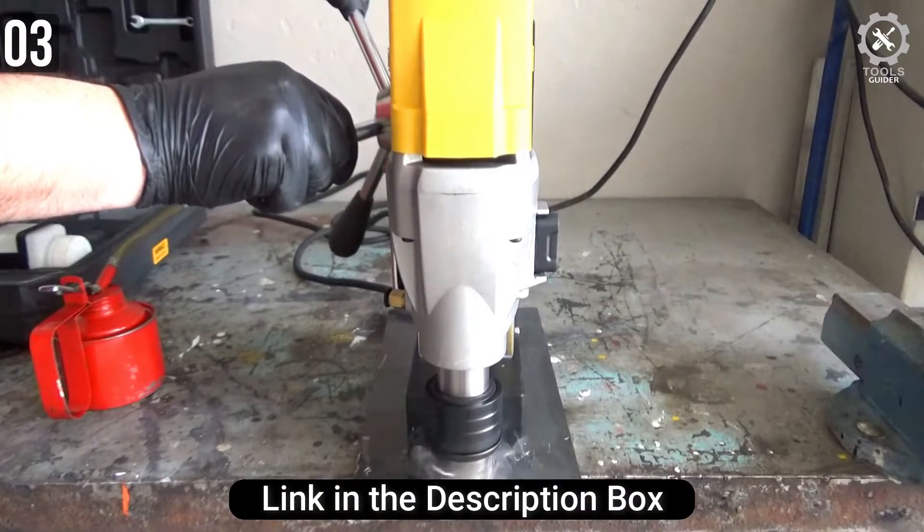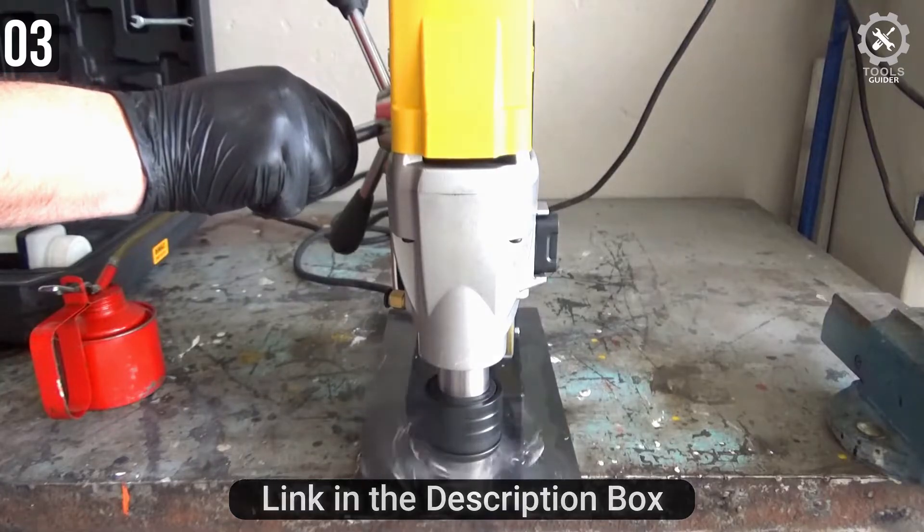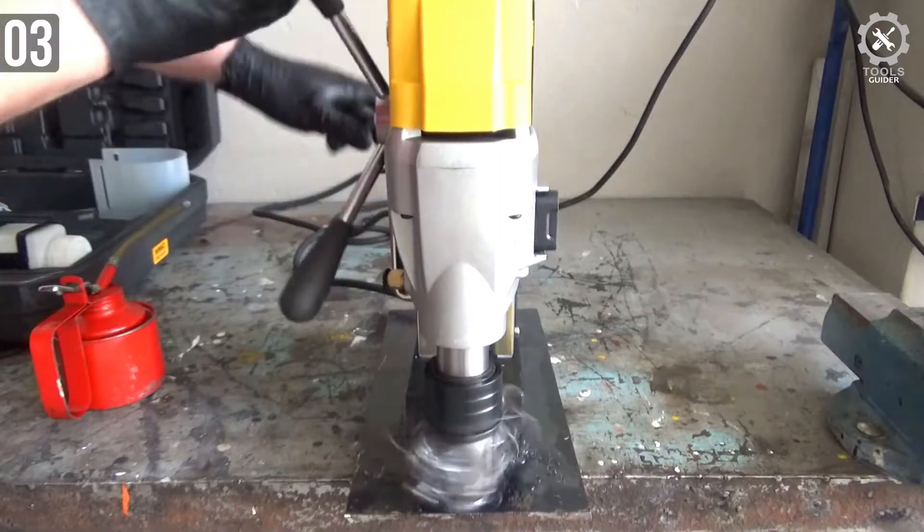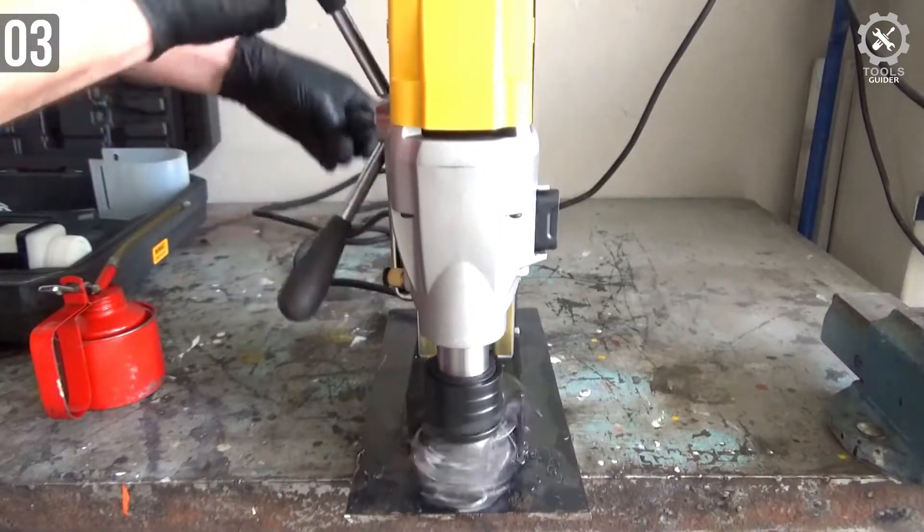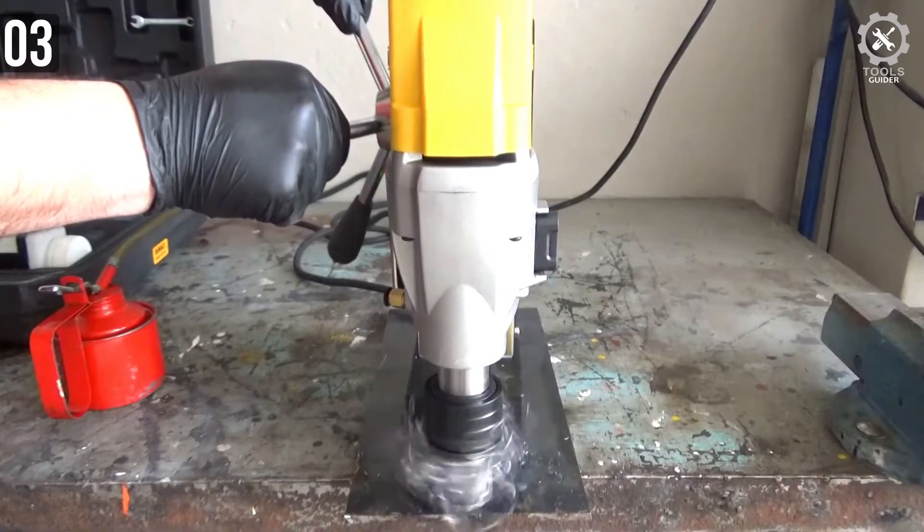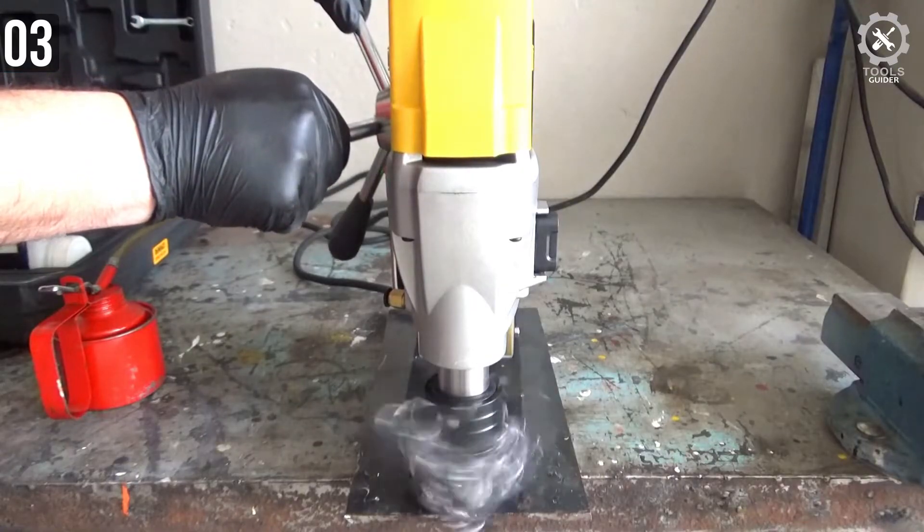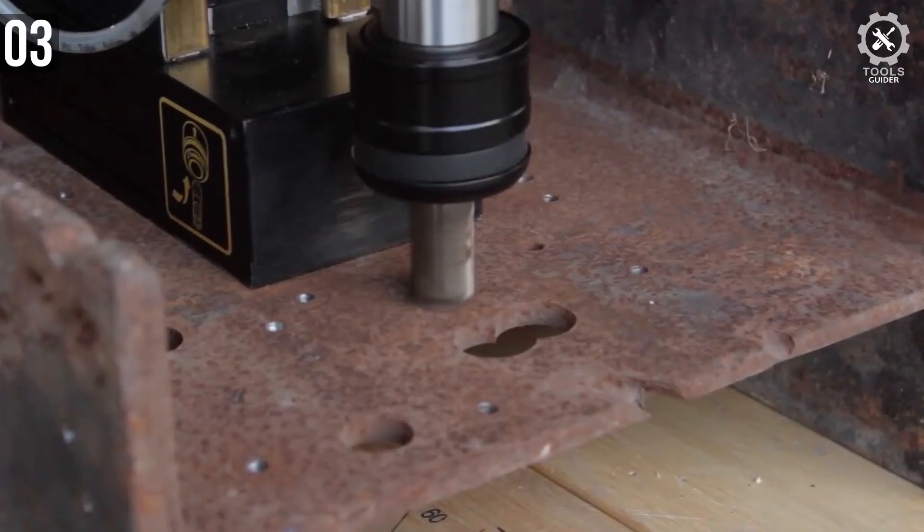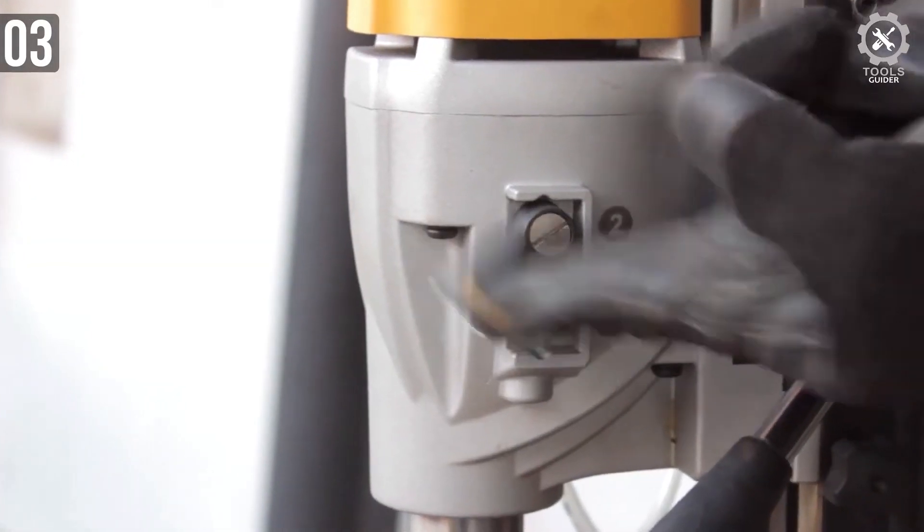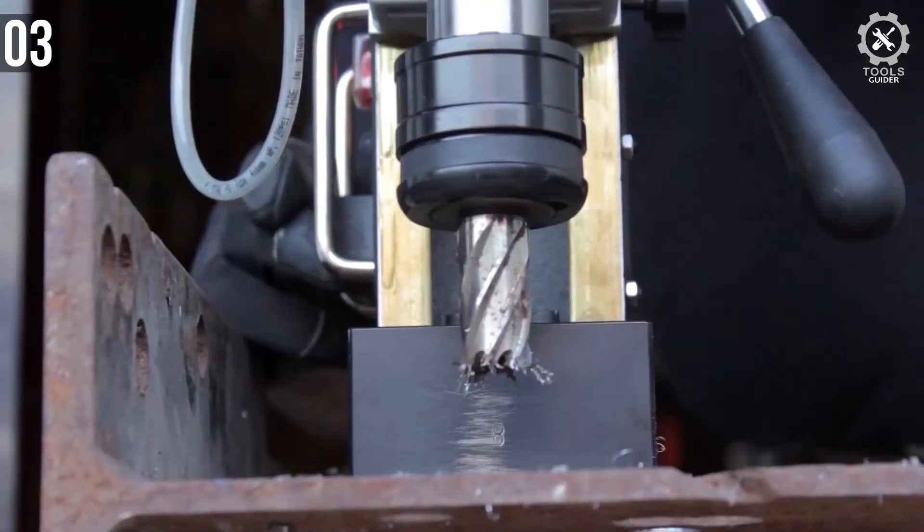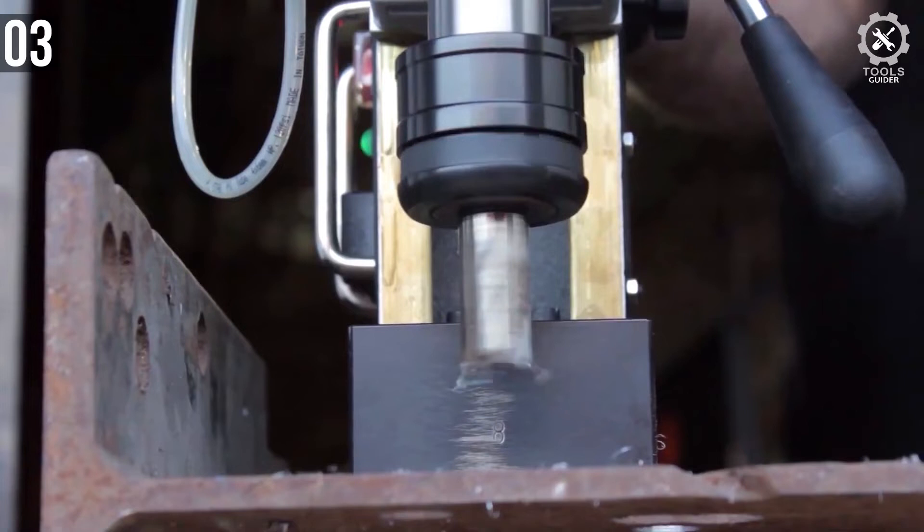The unit comes with a quick change chuck system, an overload protection with LED indicator, as well as with quick release feed handles. The thing that makes DWE1622K suitable for a variety of applications is its powerful engine. The 10.0 amp engine of this drill press provides excellent performance and can be used at two different speeds, 300/450 RPM, while the 4 inch drill travel offers maximum capacity for even the toughest jobs.